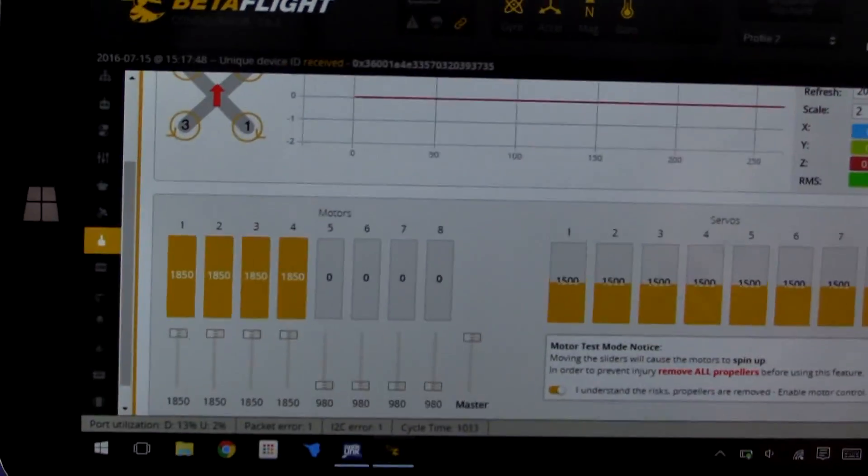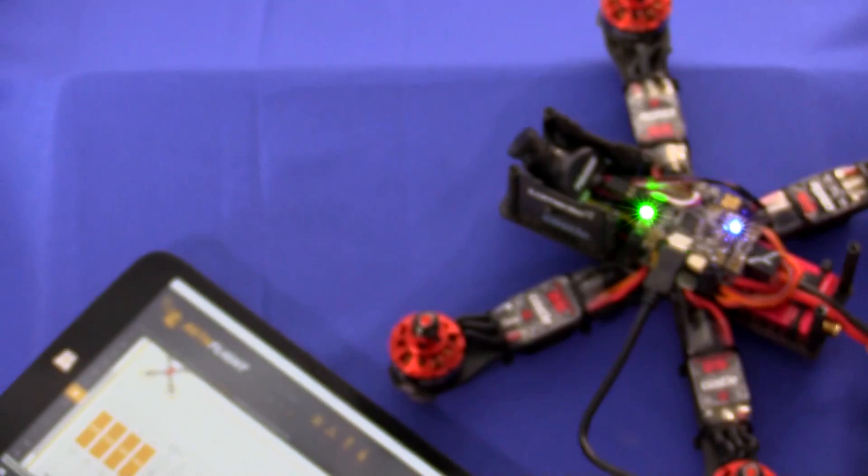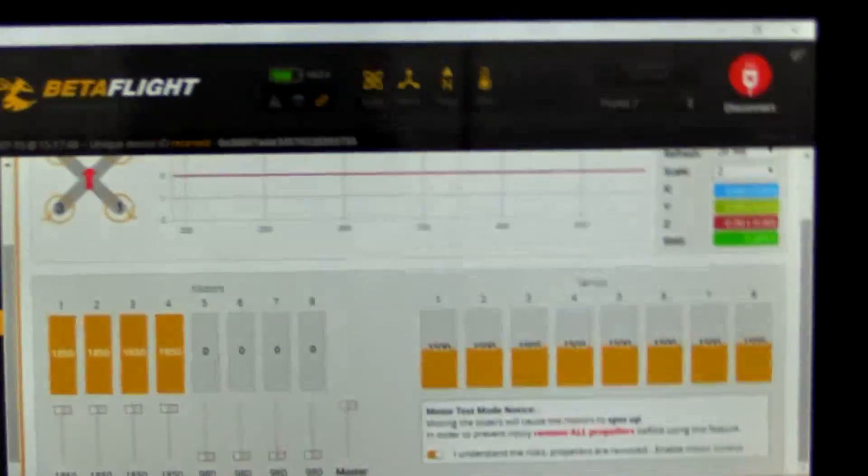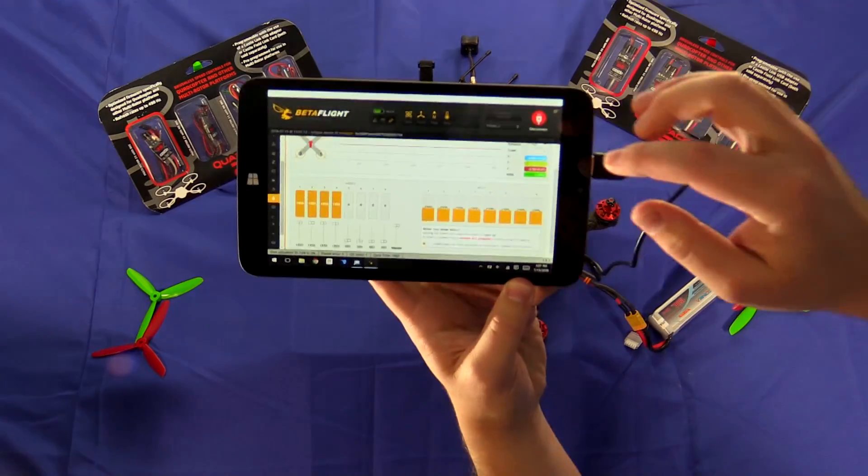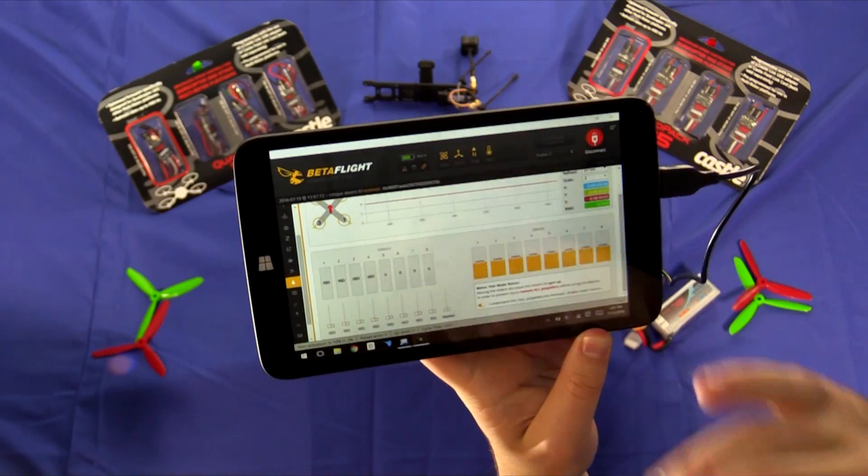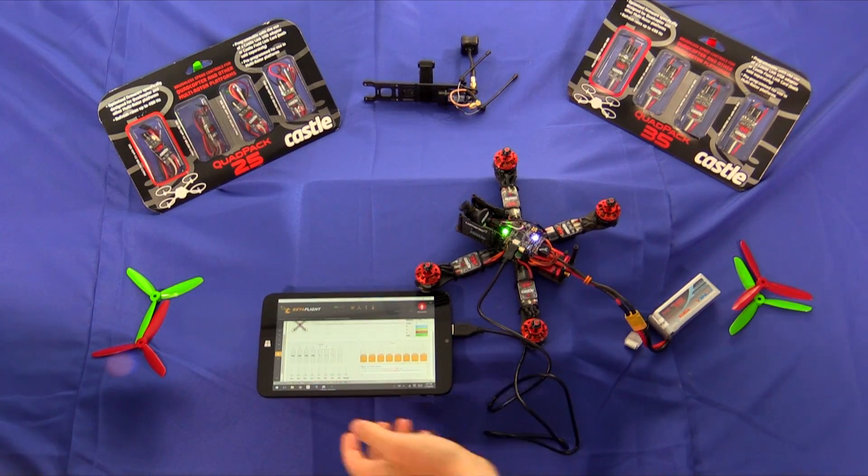So now I plug in the flight pack and the ESC beeps to recognize full throttle. So now I can bring the throttle back down to idle and that signifies that it recognized idle.